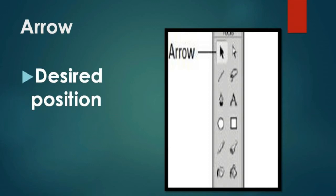Arrow: This tool is used to draw straight lines with an arrow. If you want to draw a straight line with an arrow, you can use this arrow tool. To draw an arrow, point the mouse pointer at the desired position, then click and drag the mouse to get the arrowed line. The picture will look very formatted and different in an arrowed manner.